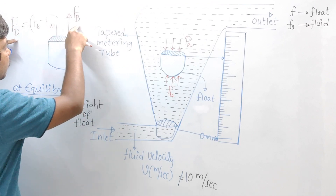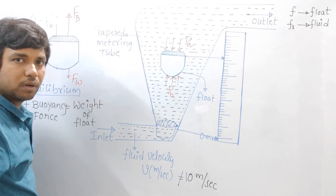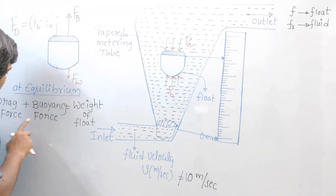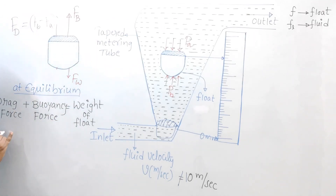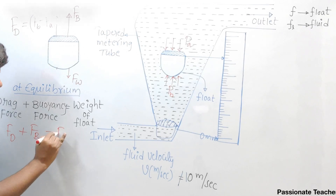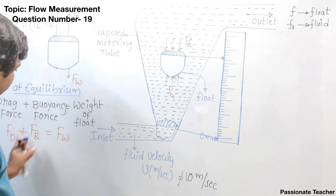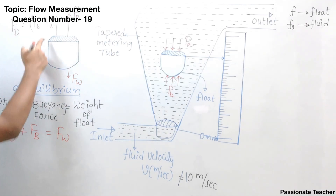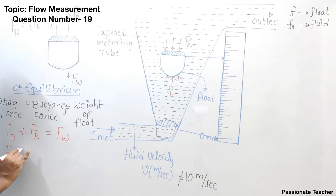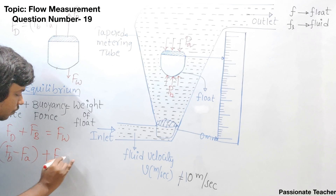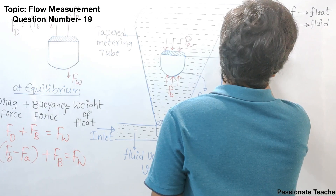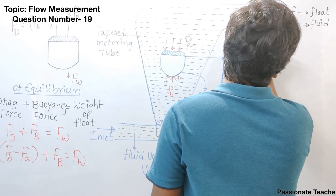At equilibrium — when the float is at rest — the sum of upward forces equals the sum of downward forces. So: drag force plus buoyancy force equals weight of the float. Writing this out: Fd + Fb = Fw, where drag force is Fb_pressure minus Fa_pressure, and adding the buoyancy force Fb equals the weight of the float.